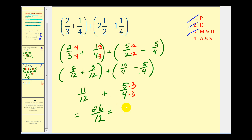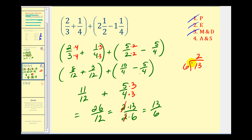We're not done — this simplifies. Twenty-six is two times thirteen, and twelve is two times six, so it simplifies to thirteen-sixths. That's simplified, but it's still an improper fraction. To convert to a mixed number, divide thirteen by six: six goes in two times (two times six is twelve) with a remainder of one. So thirteen-sixths equals two and one-sixth.